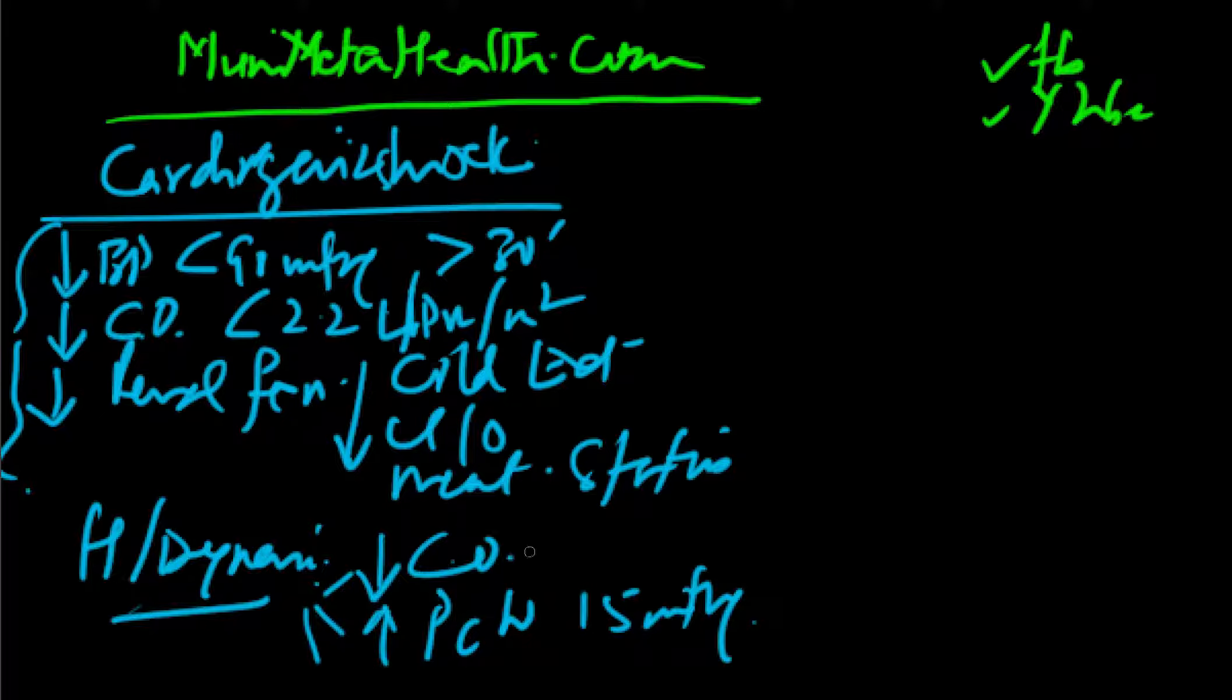Cardiac output which is low, blood pressure which is low, obviously systolic blood pressure is low, and the pulmonary capillary wedge is high. And the third part here is you have a peripheral hypoperfusion, so all signs of hypoperfusion like cold extremities, all these clinical parameters will be present hemodynamically as well.